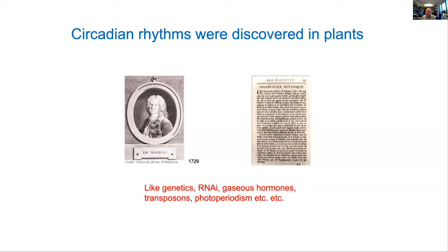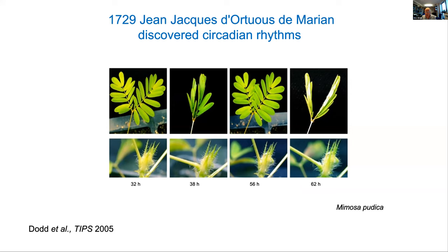What we think de Mairan was studying — he described heliotropes — he put his heliotropes in a case wrapped in a blanket in a closed cupboard and measured the rhythms of leaf movement to ensure there's no effect from the external environment. We think he was studying mimosa plants, the famous sensitive plant. Here are some images taken of mimosa plants growing in constant light — you can see both the whole leaf moving up and down with a 24-hour rhythm, and the leaflets closing up and down with a 24-hour rhythm. From this, de Mairan concluded that there was some kind of internal clockwork which could drive rhythms in plants.